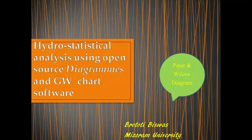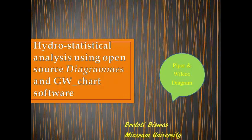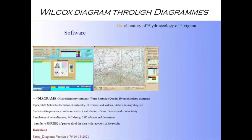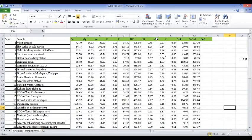Hydro-statistical tools generally require various kinds of statistical software, and these are generally very costly. So we are going to study these things through some open source softwares. For that, first what we need to do is have these sorts of data and these types of parameters.